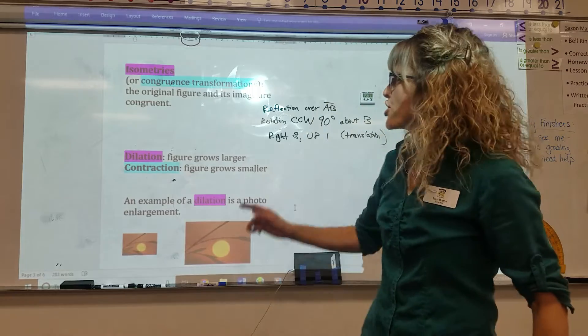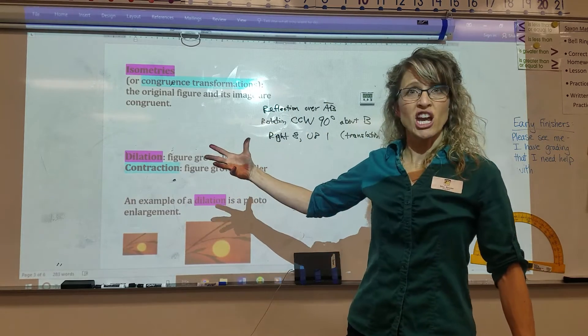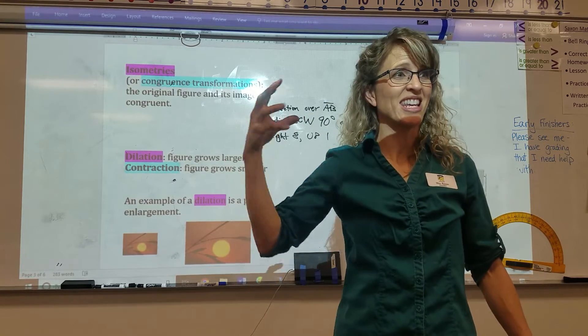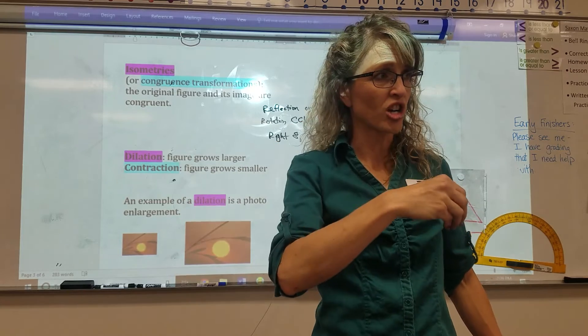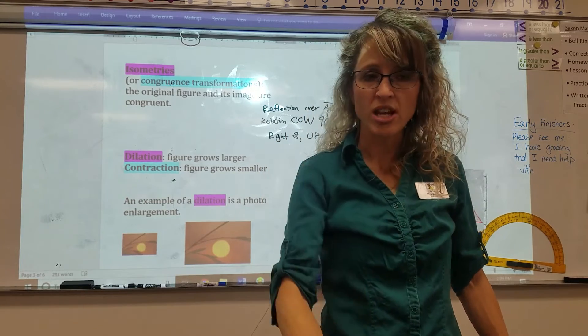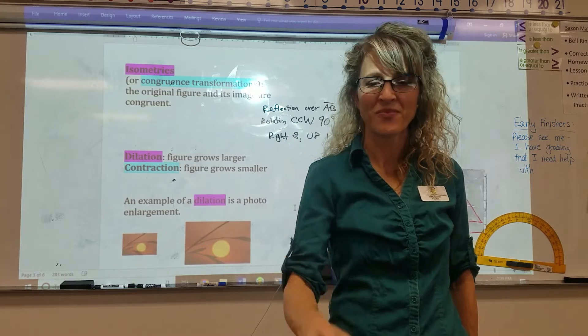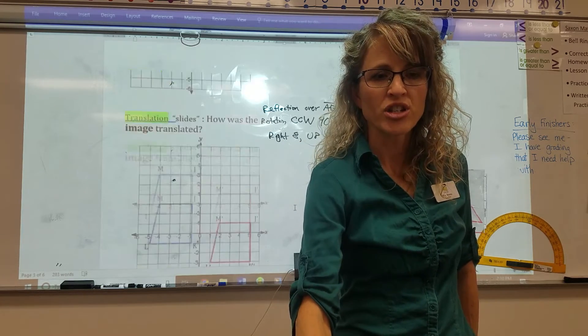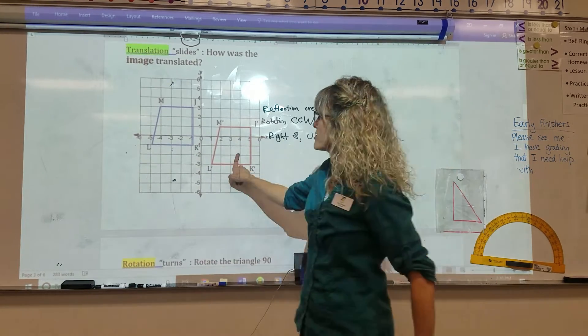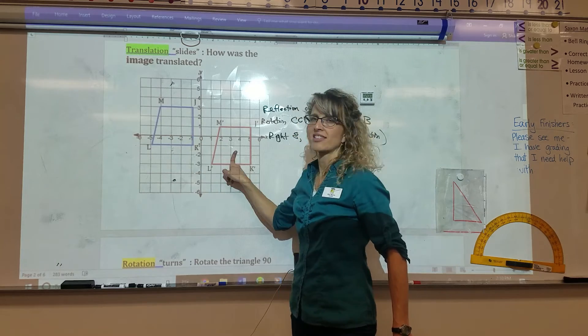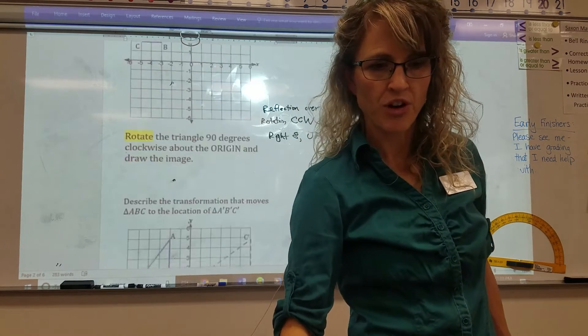If you get a congruence transformation, meaning once you've done a change, the new image is the exact same as the starting image, like the shape and size are the same, it's called an isometry. So this is an isometry of this. Size and shape stayed the same. They're congruent images.